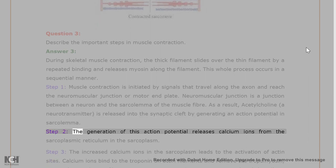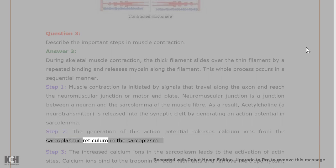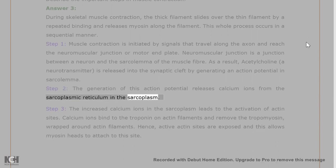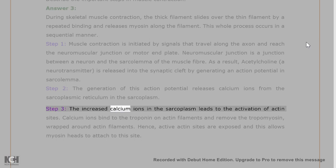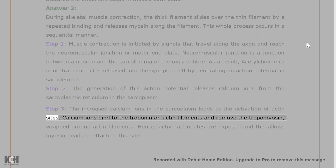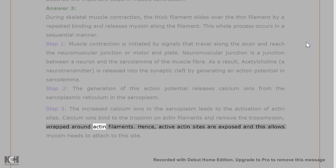Step 2. The generation of this action potential releases calcium ions from the sarcoplasmic reticulum in the sarcoplasm. Step 3. The increased calcium ions in the sarcoplasm leads to the activation of actin sites. Calcium ions bind to the troponin on actin filaments and remove the tropomyosin wrapped around actin filaments. Hence, active actin sites are exposed and this allows myosin heads to attach to this site.